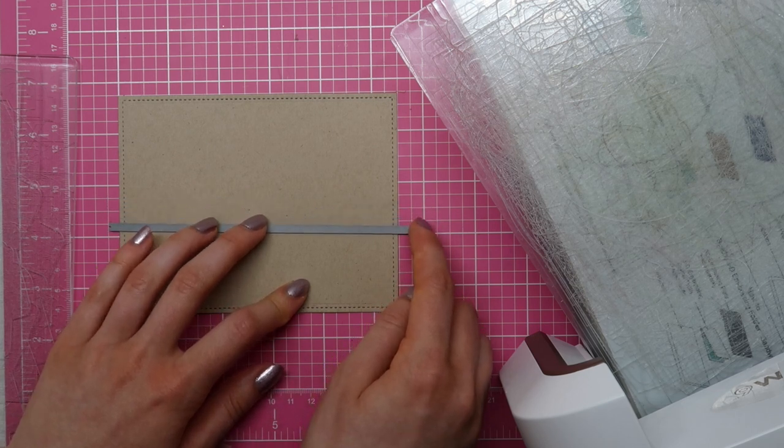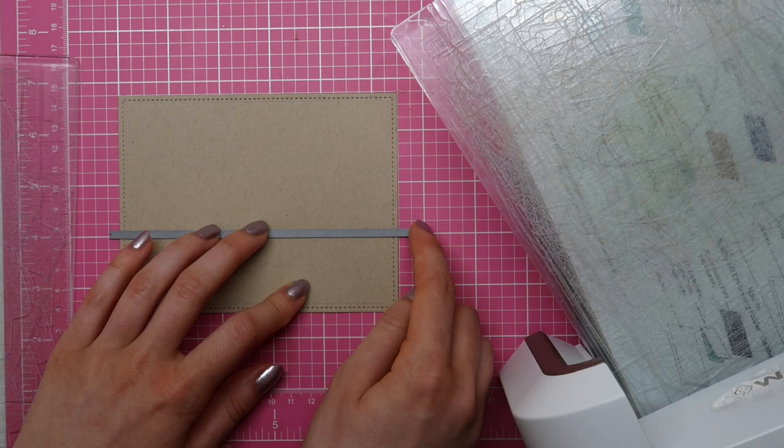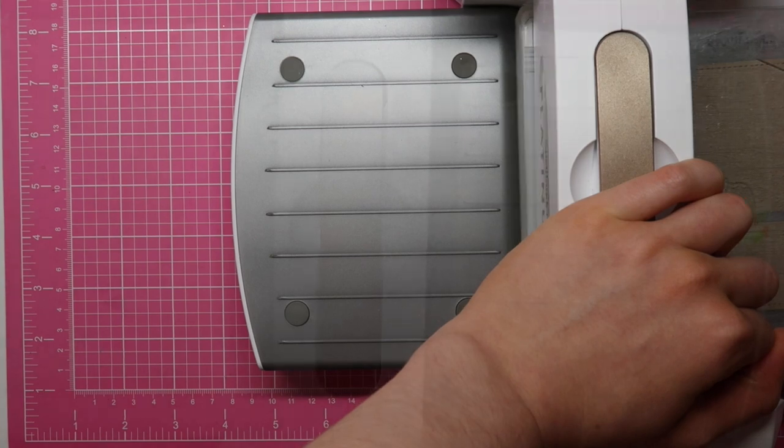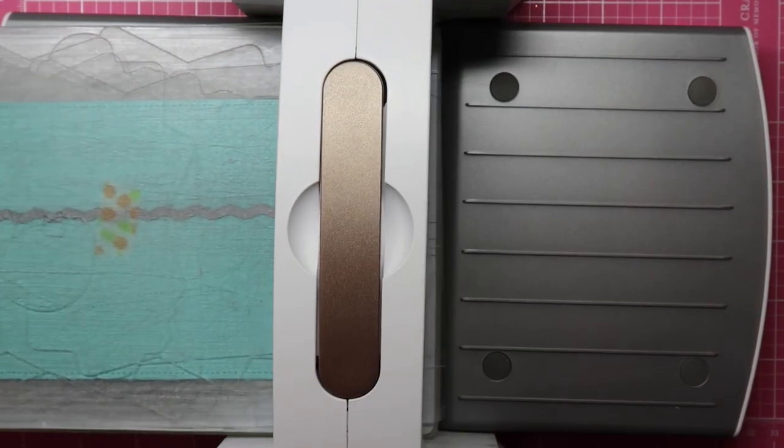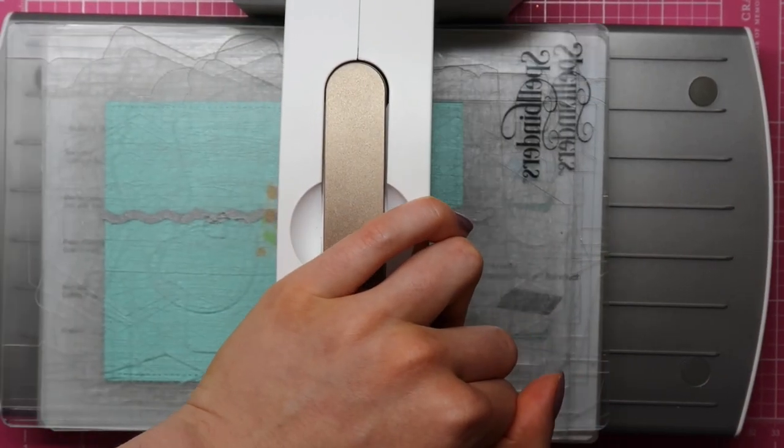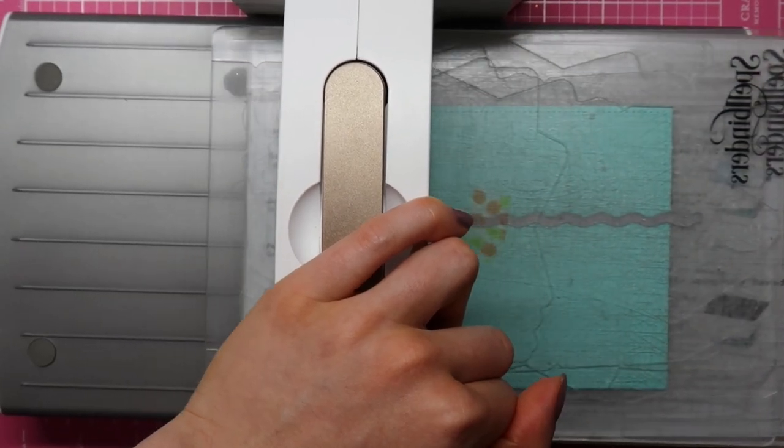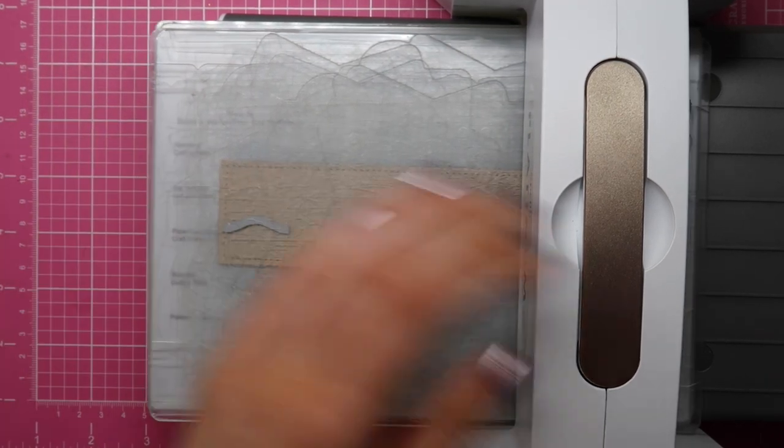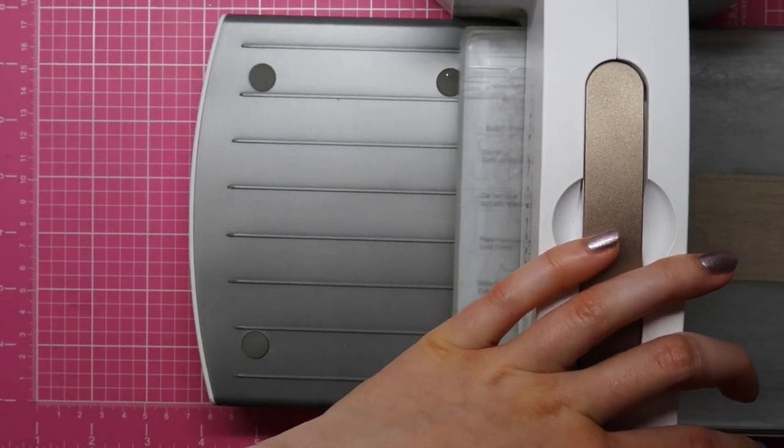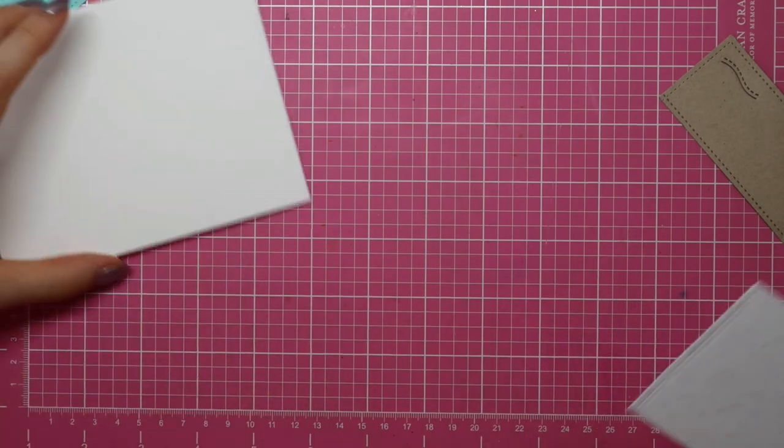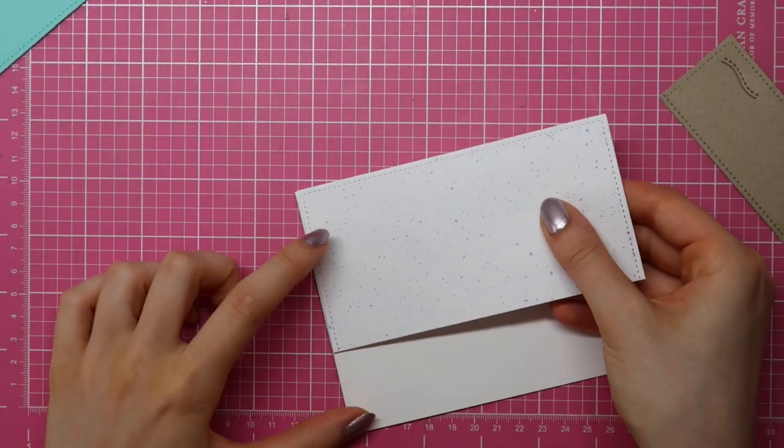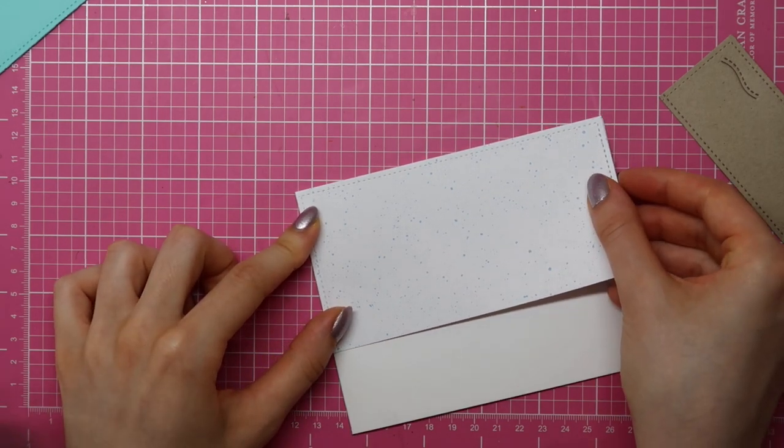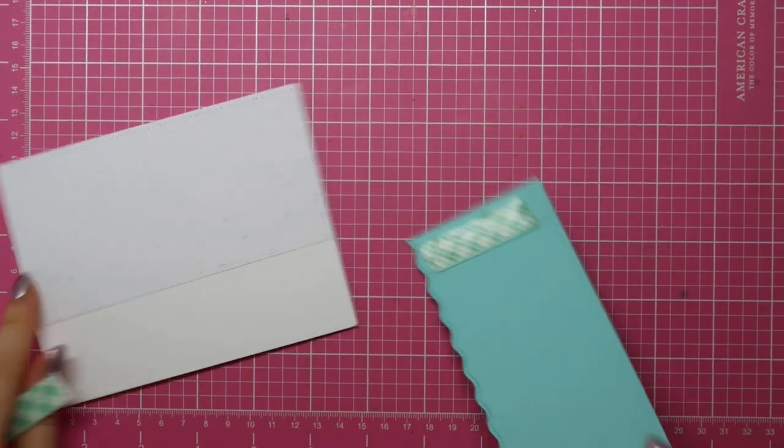Next, I die cut a rectangle using the Large Stitched Rectangle die cut set from Lawn Fawn and some Neenah Desert Storm cardstock. I am also using a stitched edge die from the Pretty Pink Posh Stitched Borders 2 die cut set as well as one of the dies from the Lawn Fawn Stitched Simple Wavy Borders dies. I am using the Sandy Beach Accents dies to create some little hills for my sand.